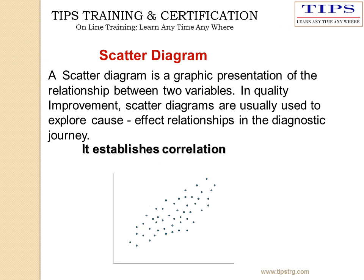A scatter diagram is a graphical representation of the relationship between two variables. In quality improvement, scatter diagrams are usually used to explore the cause and effect relationship in a diagnostic journey. This is the scatter diagram represented here. It establishes the correlation between these two variables, i.e., X and Y.